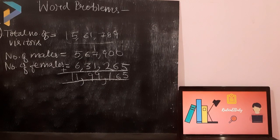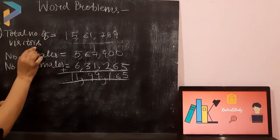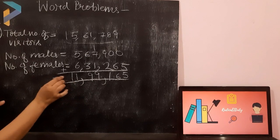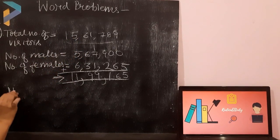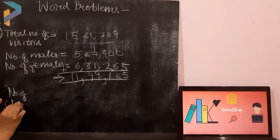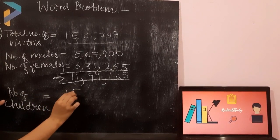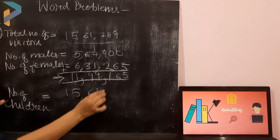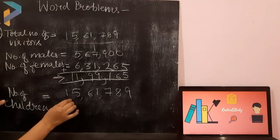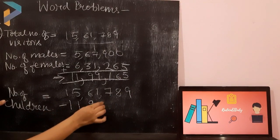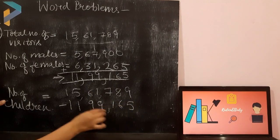We have to subtract it from the number of visitors. This has to be subtracted from the total number of visitors. I am writing it for you. Number of children is equals to 15,61,789 minus 11,99,165. You have to subtract.